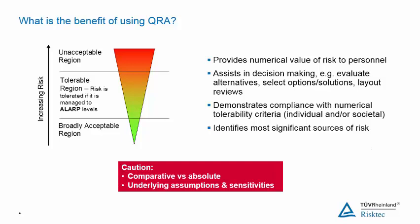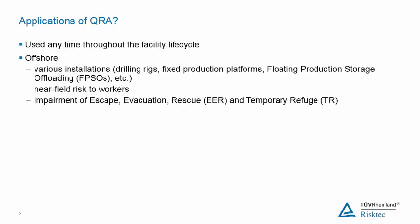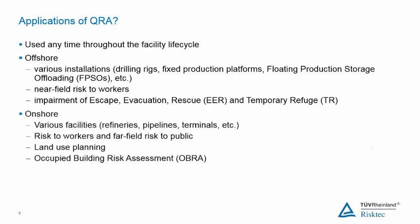We've touched on some uses of QRA — what other applications are there? QRA can be used onshore or offshore under any stage of the facility's life cycle. The best point to reduce risk is during the design phase. When used offshore, QRAs assess the near-field risk to workers — this can be used for determining the risk of fatality and the risk of impairing escape, evacuation, and rescue provisions, including impairment of a temporary refuge. Onshore QRAs can assess both near-field risk to workers and far-field risk to the public, providing useful inputs for land use planning by identifying risk zones within which it may not be prudent to locate schools, hospitals, or residential areas. Onshore QRAs can also inform on-site occupied building risk assessments to help with locating buildings such as control rooms and offices in lower-risk locations.